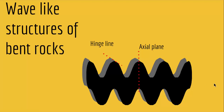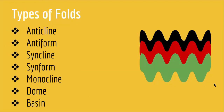We have different types of folding, and here they are: we have anticlines, we have anti-forms, we have synclines, we have synforms, we have monoclines, we have domes, and we have basins. All these are types of folds, so let's look at each of them in more detail.